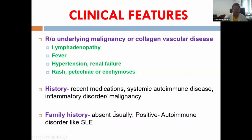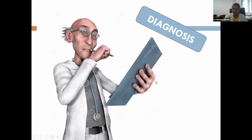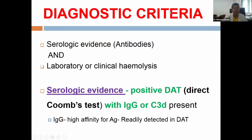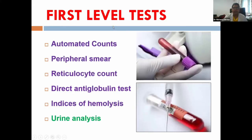The diagnostic criteria for warm AIHA require laboratory or clinical evidence of hemolysis along with serological evidence. The serological evidence is a positive direct antiglobulin test — previously called the Coombs test. This positivity may be for IgG, C3d (complement), or both. Since IgG has high affinity for antigen, it remains attached to RBC membranes, making detection very likely.